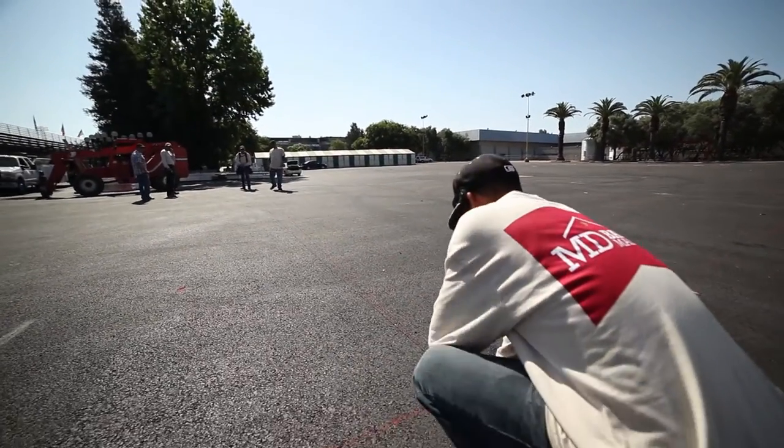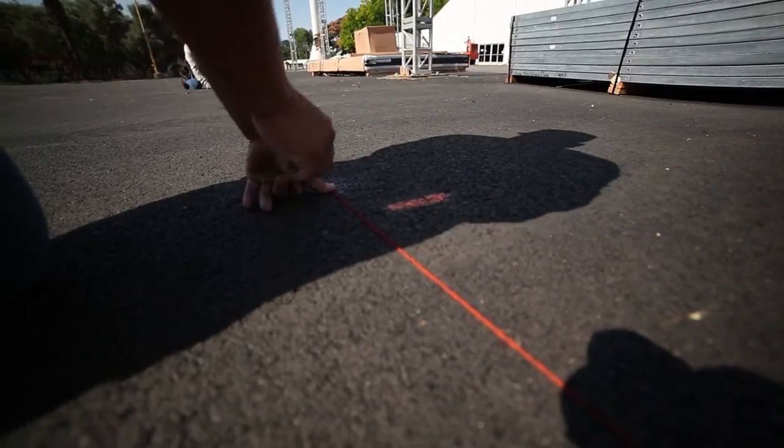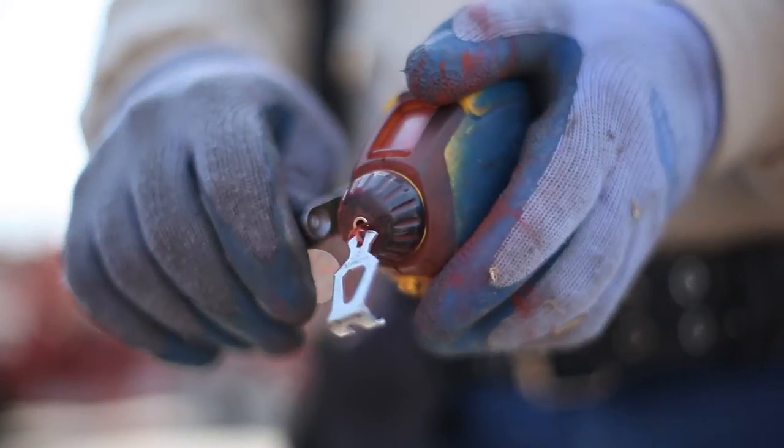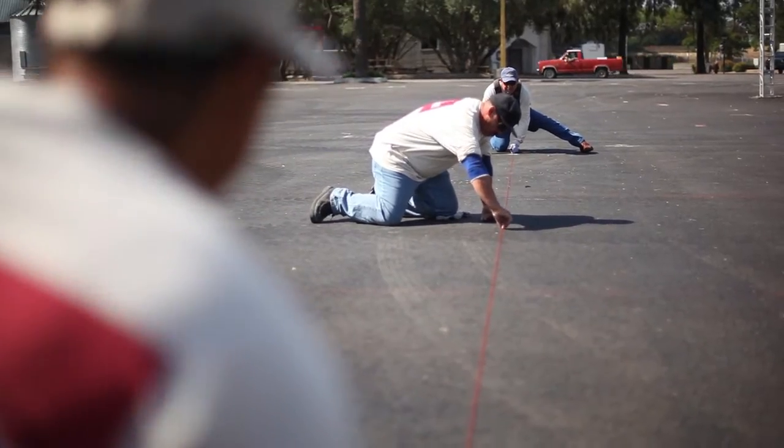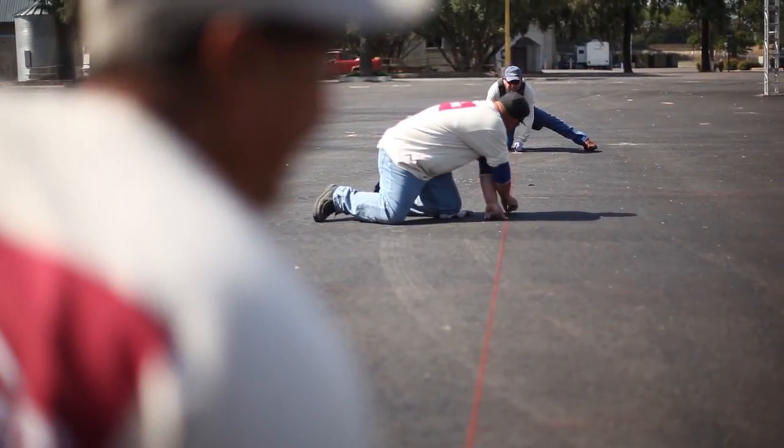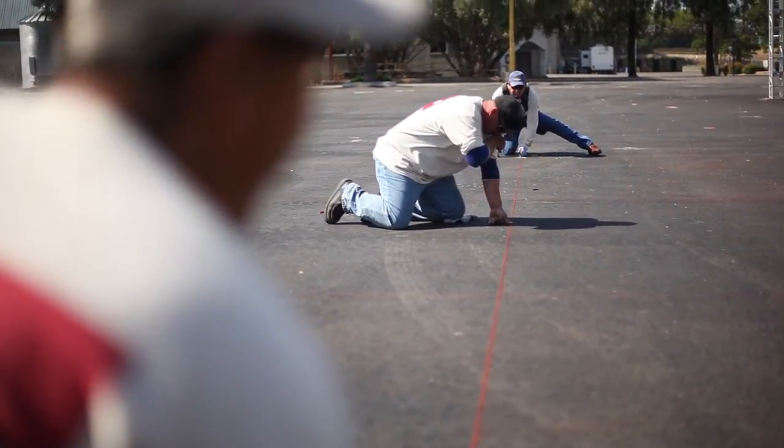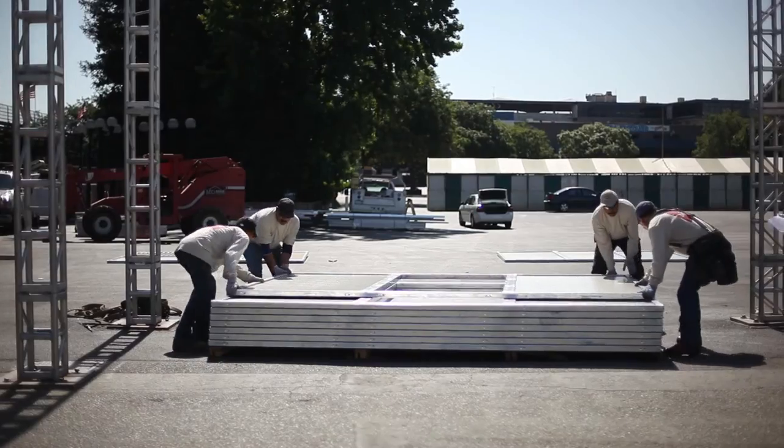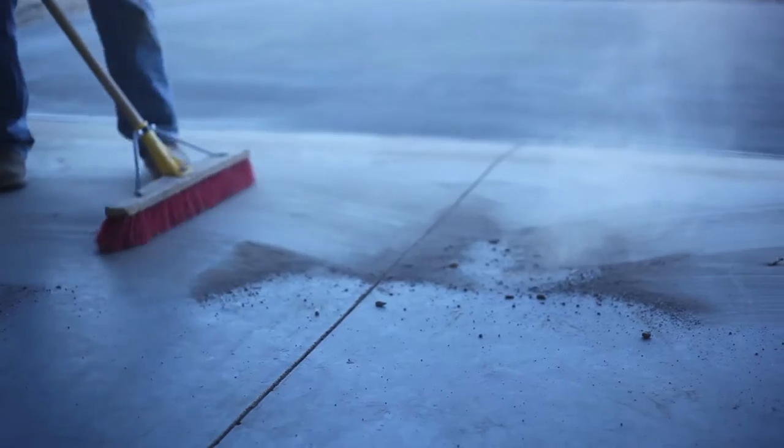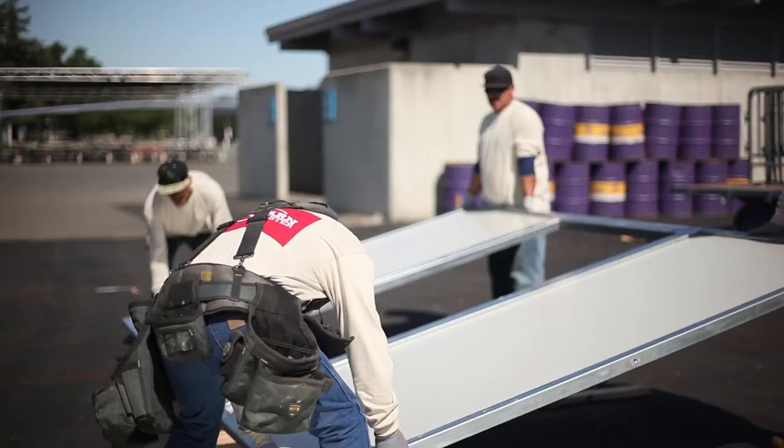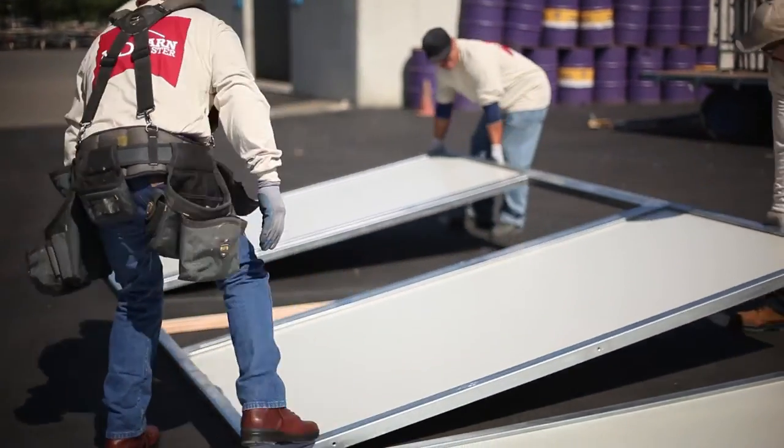Measure and snap chalk lines to ensure proper alignment of the barn on the foundation for wall placement. Snap the chalk line where the outer edge of the barn will be placed, normally 3 inches from the outer edge of the foundation. Before wall placement, make sure that you remove any rocks or debris from the foundation that may scratch or damage the bottom of the walls.